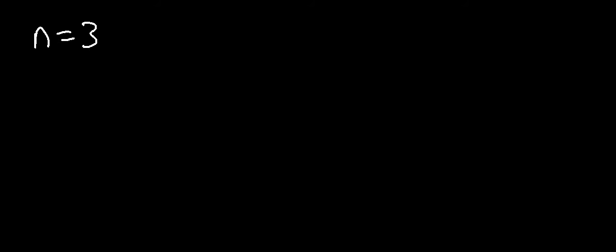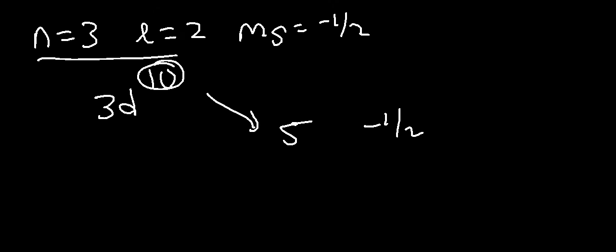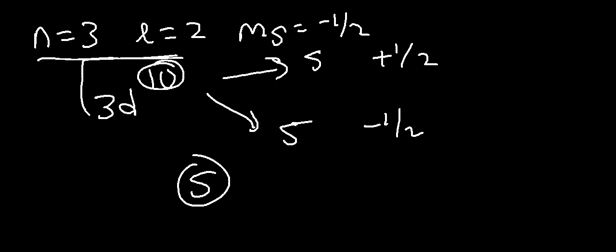Let's try another example. If N is 3, L is 2, and MS is negative 1/2, whenever you have the value of MS, look at the previous two quantum numbers — the answer is simply half of that. When N is 3 and L is 2, we have the 3D sublevel, which can have a maximum of 10 electrons. Therefore, half of those 10 electrons will have a spin of minus 1/2. The other 5 will have a spin of plus 1/2. So the answer is 5.